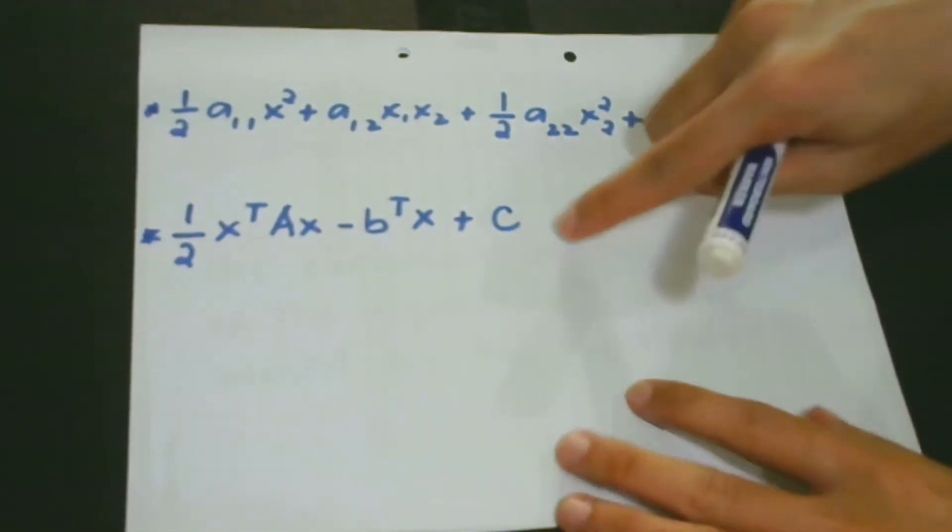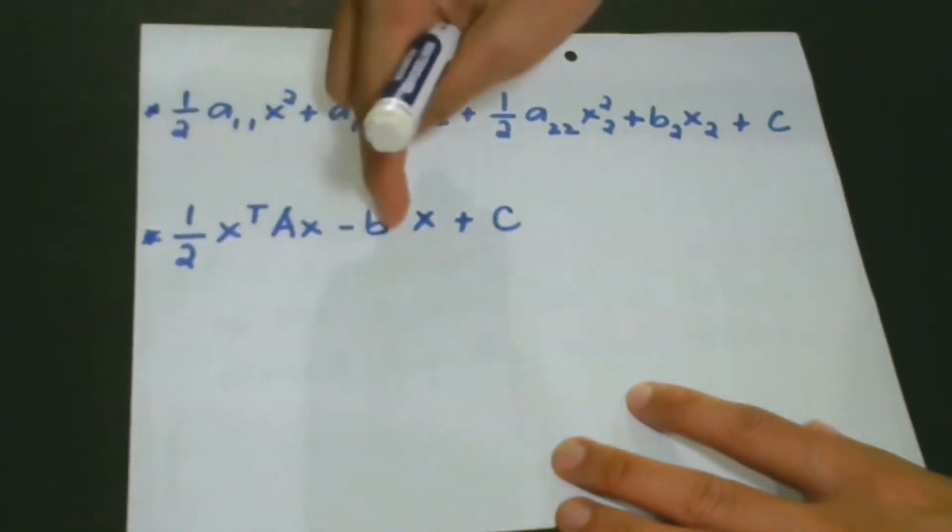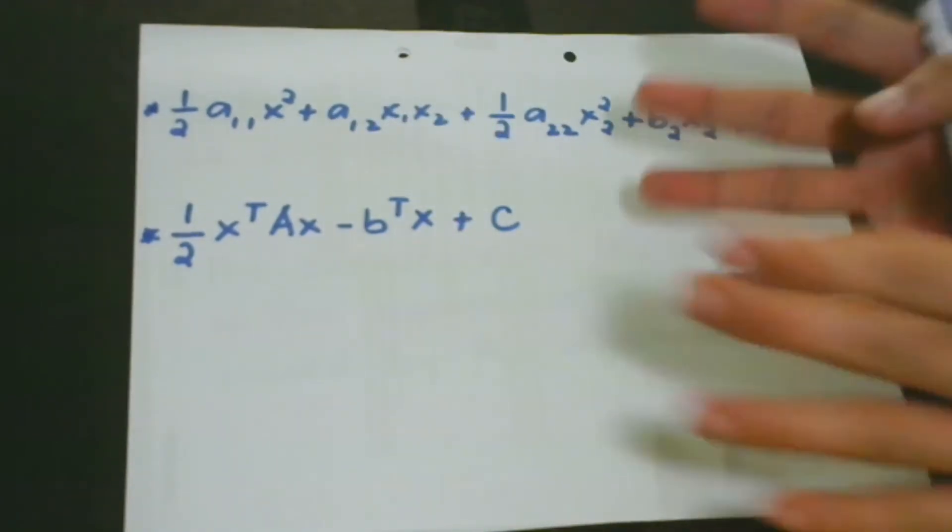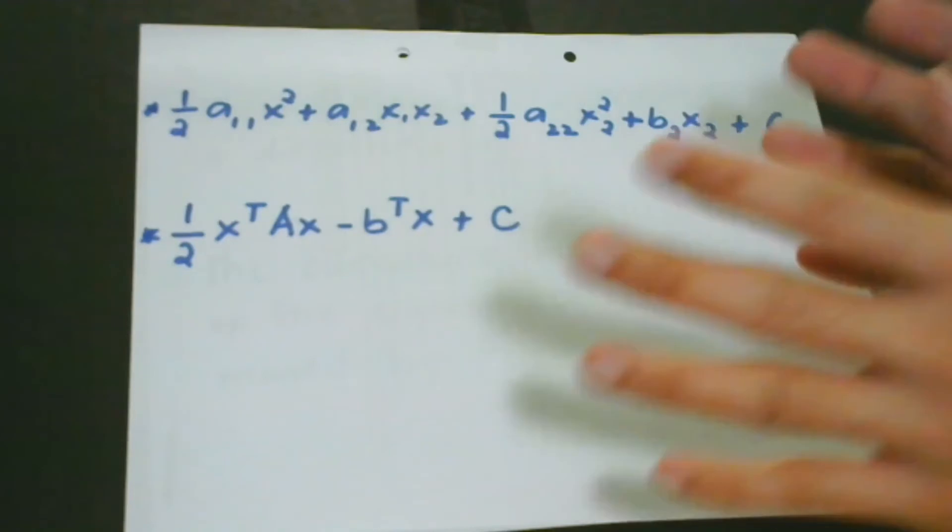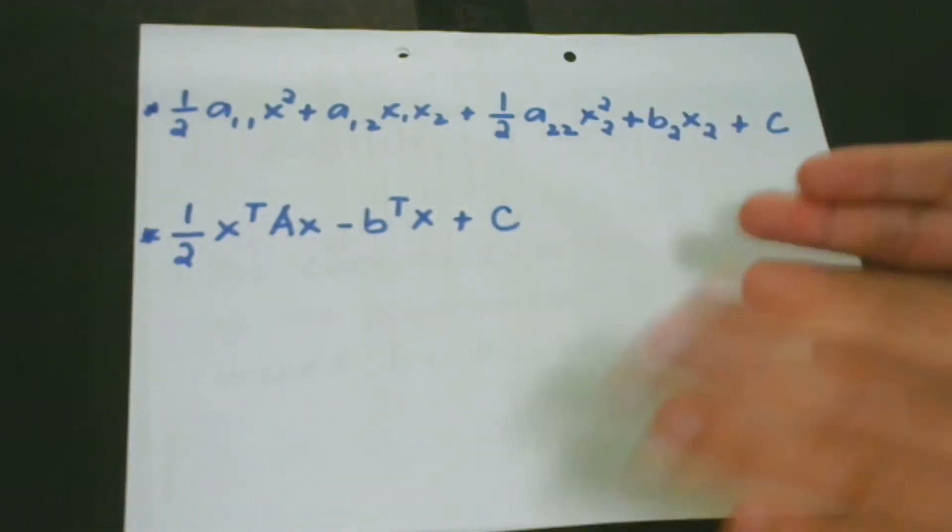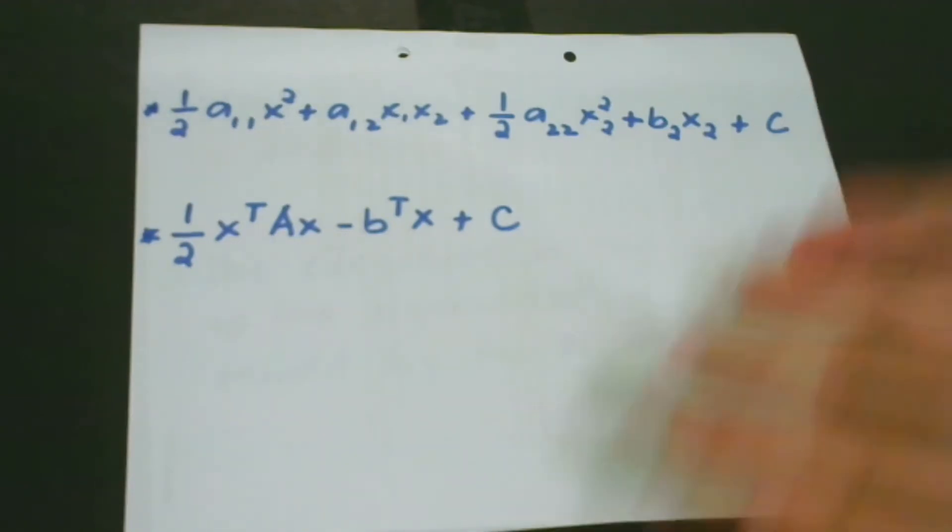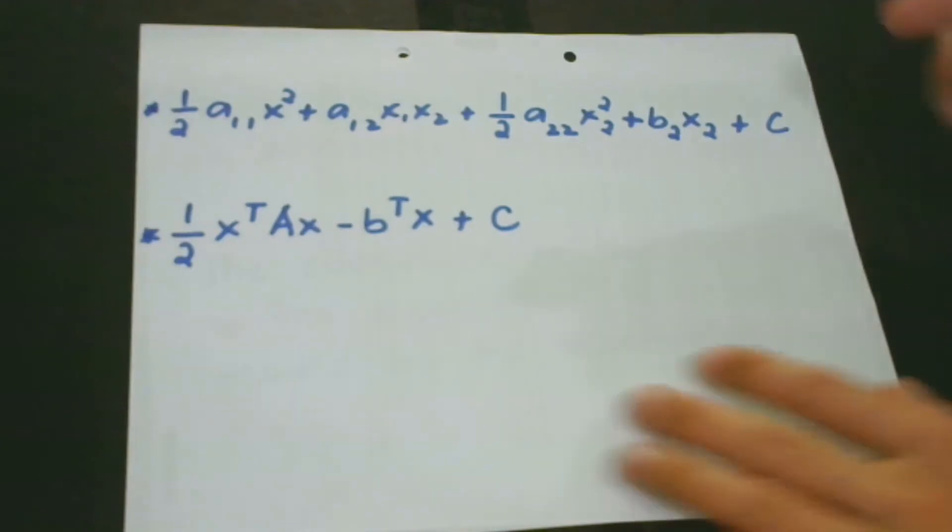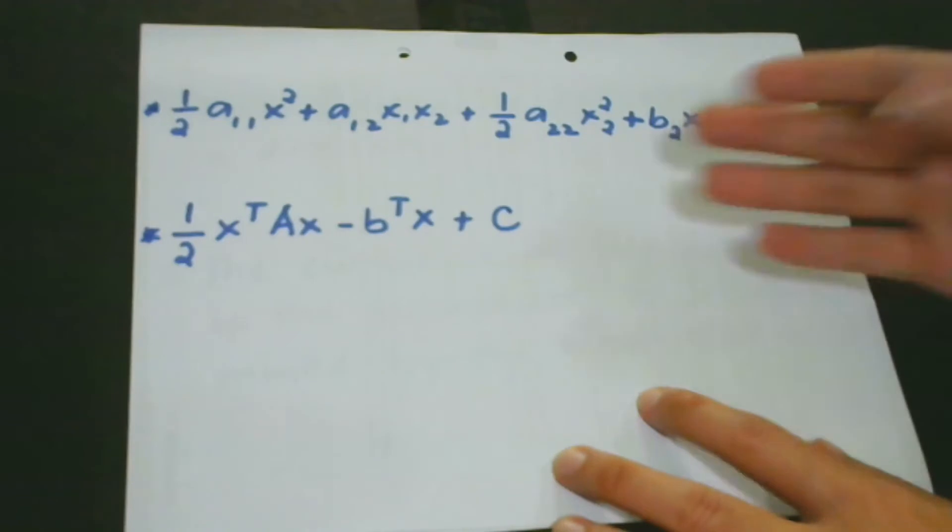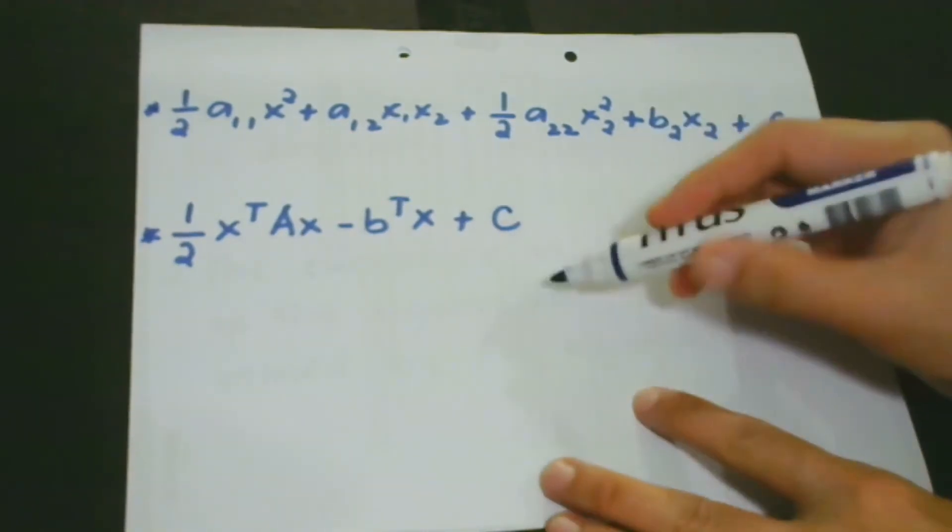If you're going to write this in matrix form, then the form is this: one-half x transpose Ax minus b transpose x plus c. Of course, we would not be able to go through the process of dealing with this one because we're done with this. We learned about how to define a model and the different parameters that we have to take note of.